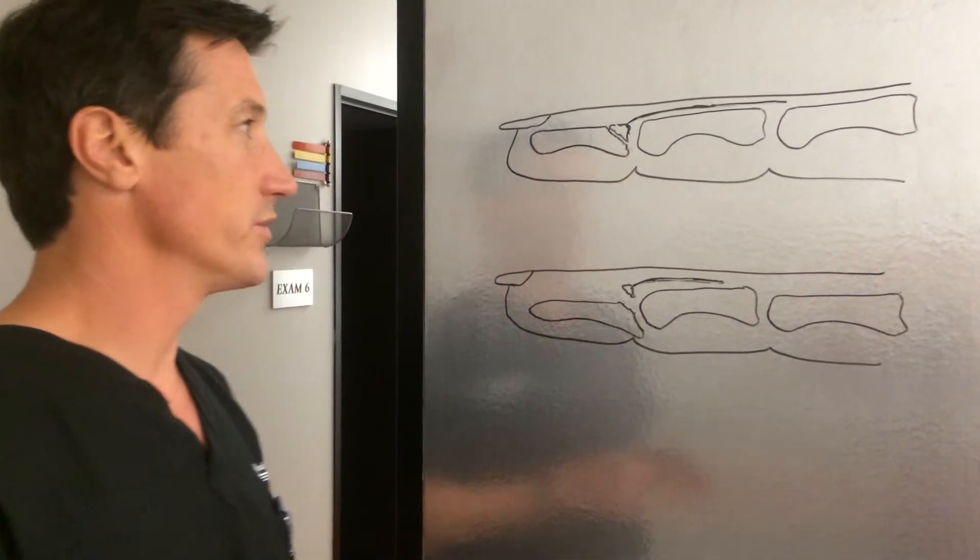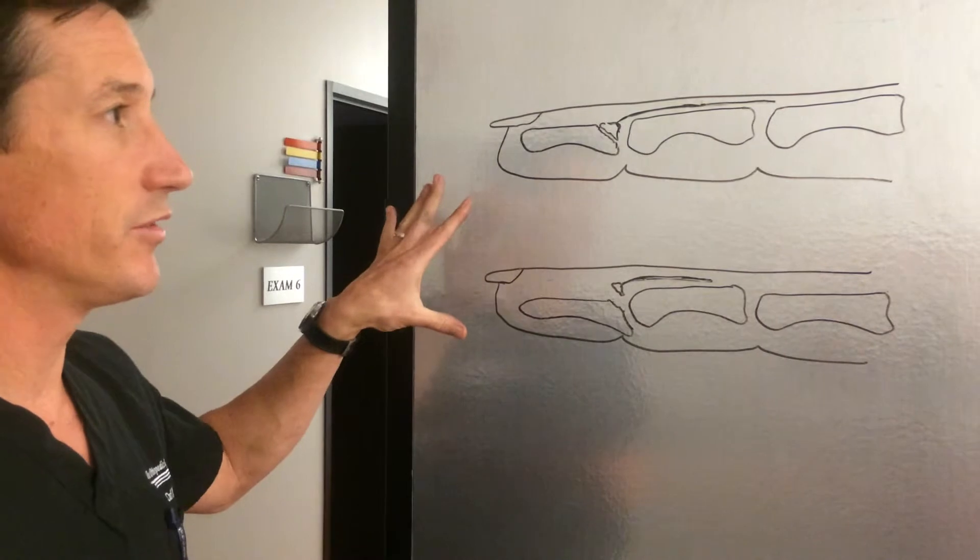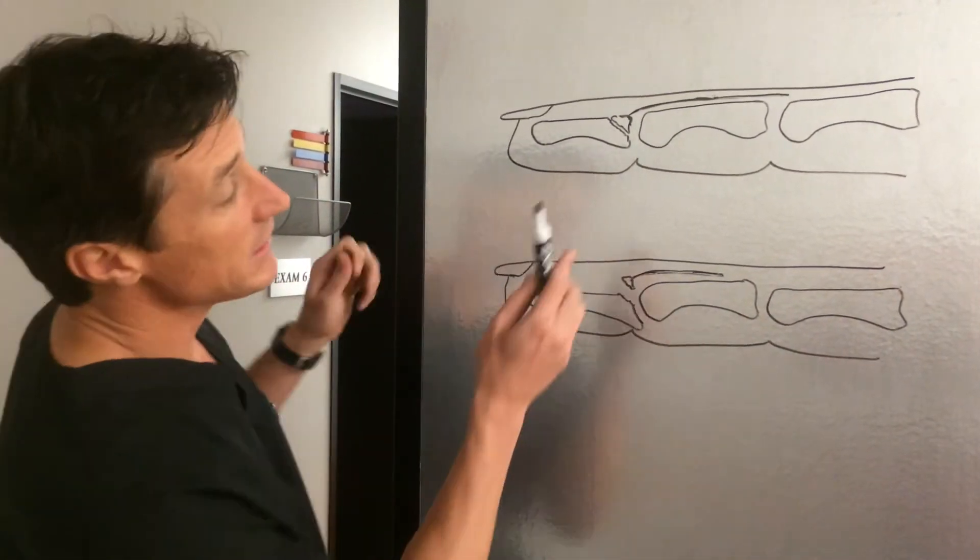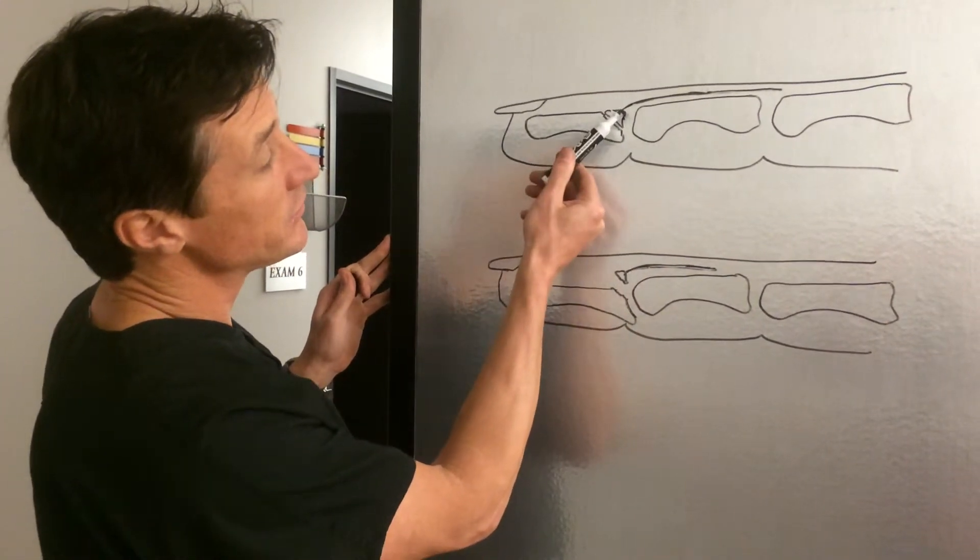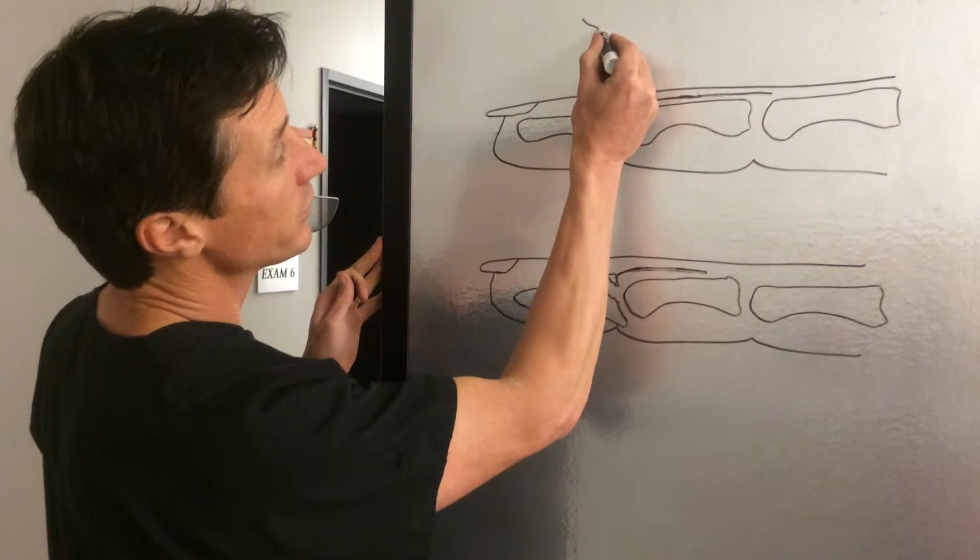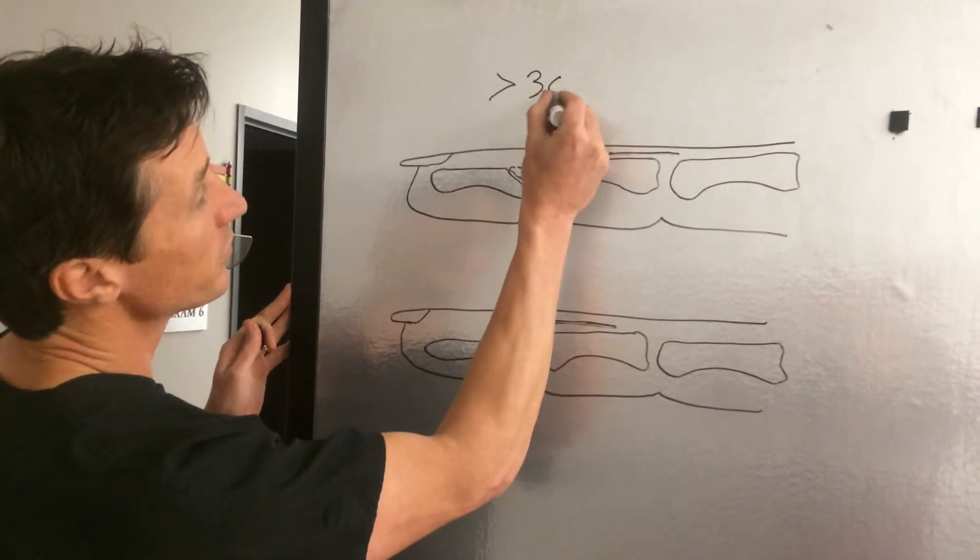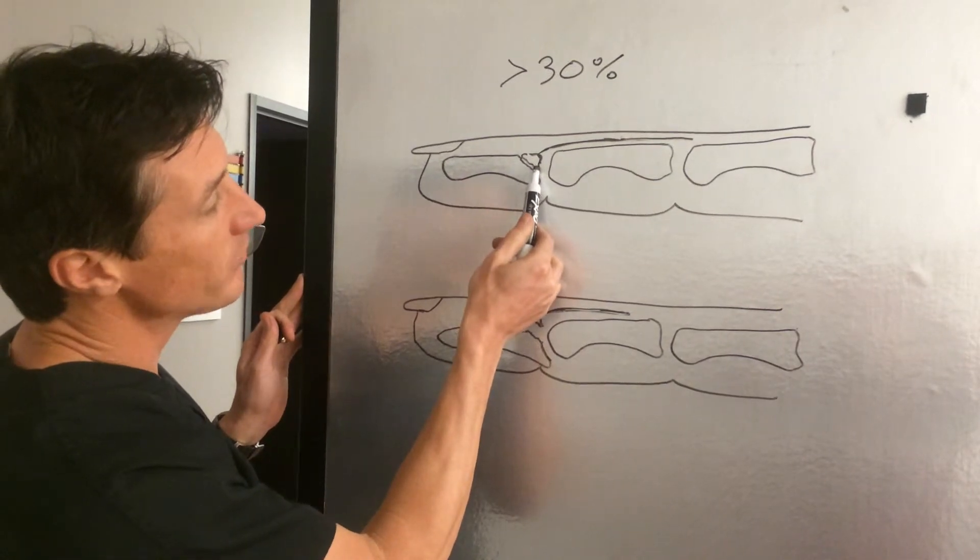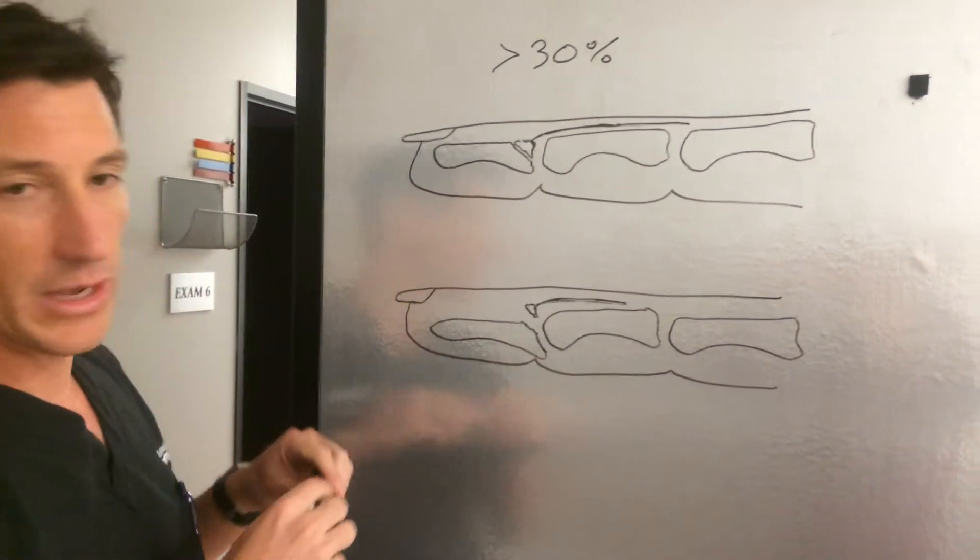As far as bony mallets, which ones do we treat with surgery? There are a couple indications. One is if the bony fragment is very large, greater than 30% of the articular surface. When it's greater than 30% of the articular surface, there's a chance of some post-traumatic arthritis occurring within the joint, and then oftentimes we'll fix that with surgery.